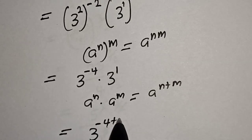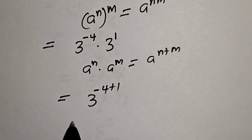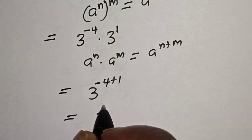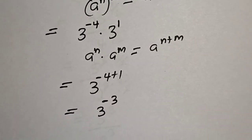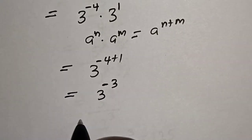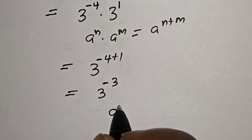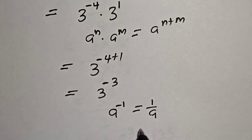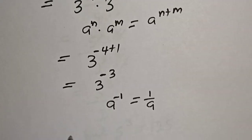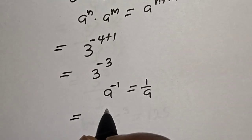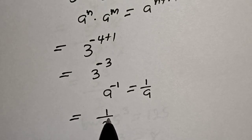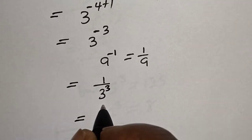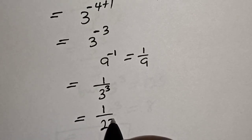Applying these rules, we get 3 raised to power minus 4 plus 1, which equals 3 raised to power minus 3. And since a raised to power minus 1 equals 1 over a, this becomes 1 over 3 raised to power 3, which equals 1 over 27. That is our final answer.